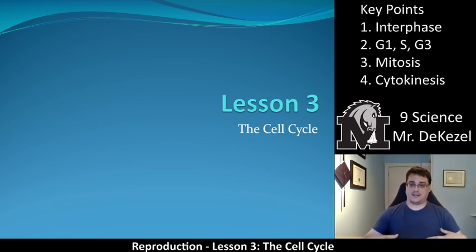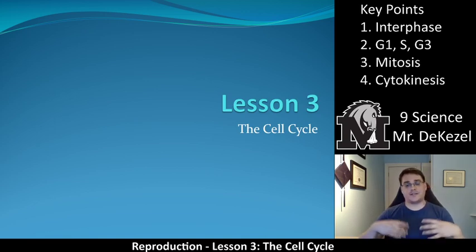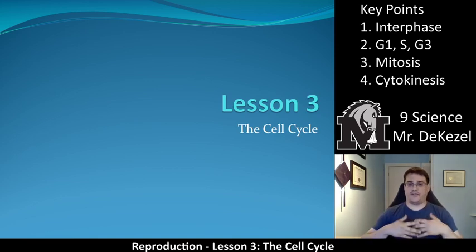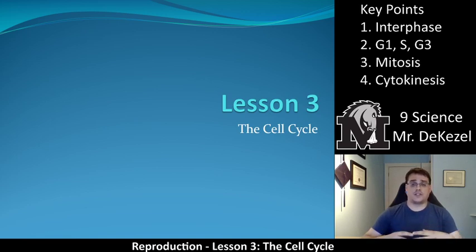I like to think of the cell cycle as like one year in the life of a cell. Every time it divides — which we'll talk about in future lessons — it's kind of like a birthday. Then it gets to start all over, kind of like we do. We have a birthday, start the year over, get older and older, then have another birthday. So that's how I like to think of the cell cycle. We're going to talk about the steps in the cell cycle, how it grows, what happens in it, and then we'll focus on smaller pieces of it in lessons four and five.